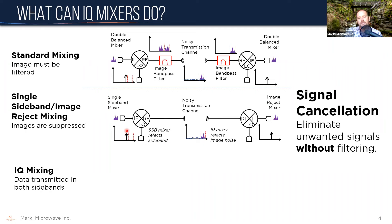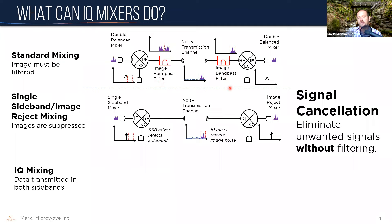A single sideband mixer is a three-port device that takes in the same signals as a standard mixer but simply doesn't make a second sideband — so you don't need that filter, and your problem is already solved. You transmit it over the noisy channel. An image reject mixer is the down-converting version of a single sideband mixer: single sideband mixers are always up-converting, image reject mixers are always down-converting. The image reject mixer rejects the noise in the image sideband, you get back your original signal, and you've saved yourself the annoying high-frequency bandpass filter.